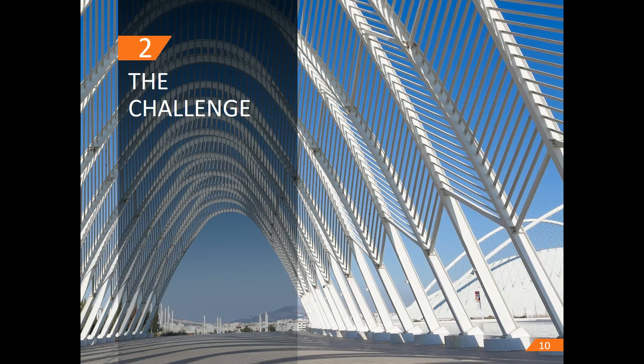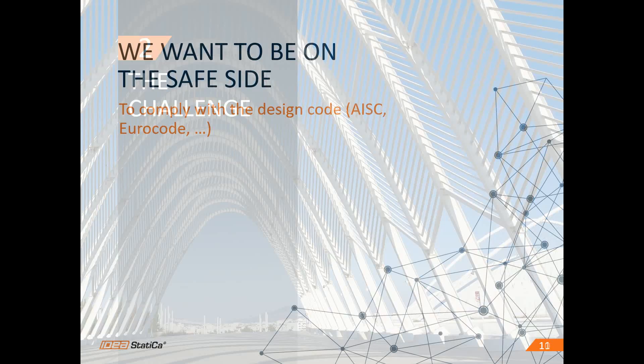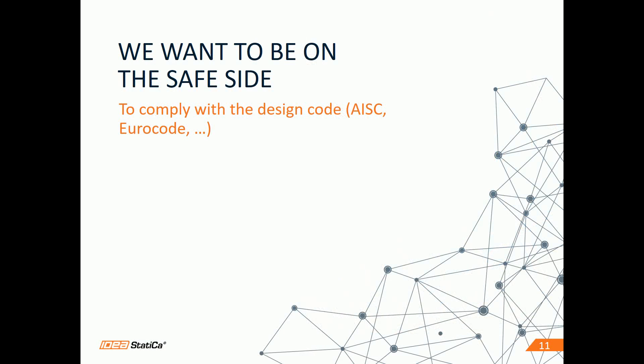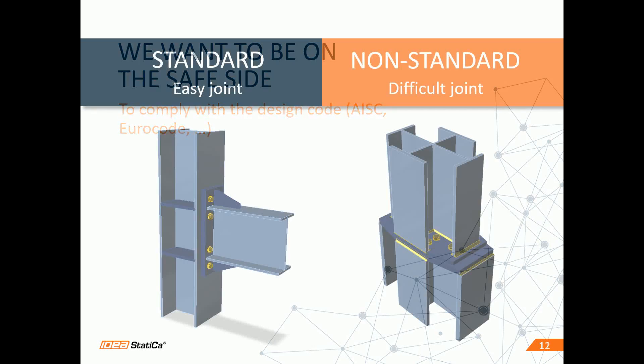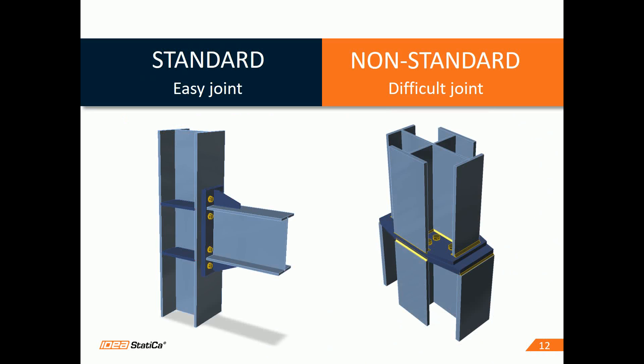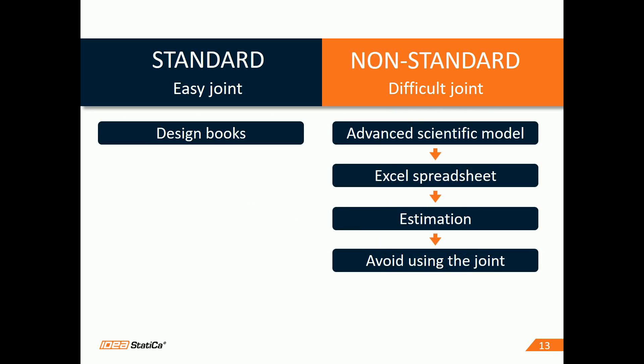Today's construction process is getting faster and faster, and everybody wants to be on the safe side. This means to comply with the code — US code, Euro code and others. In our steel projects, there are standard, easy joints and non-standard, difficult joints.